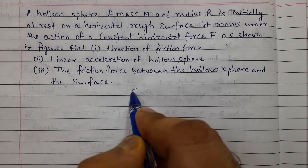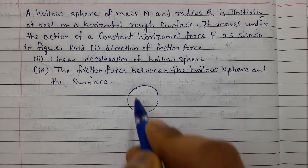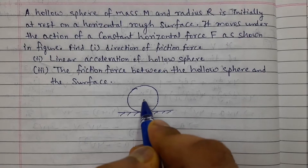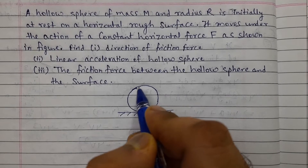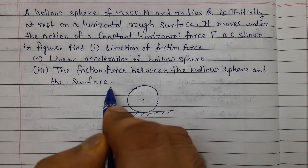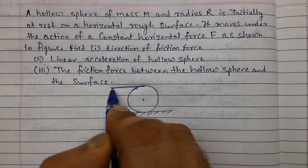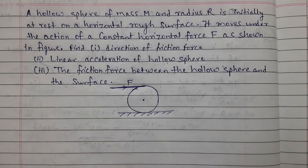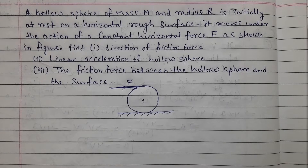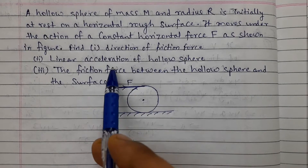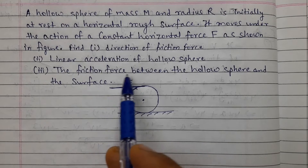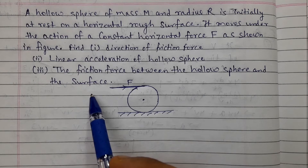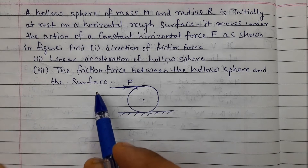So, this is the hollow sphere, and this is the center — the center of mass of the hollow sphere. The force is applied tangentially at the upper point, at this point, this is F. So for this configuration we have to find out the direction of friction force, the linear acceleration of the hollow sphere, and the friction force between the hollow sphere and the surface.